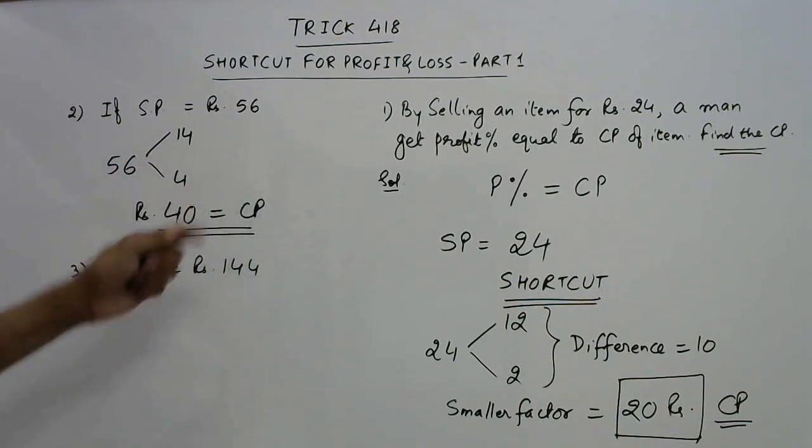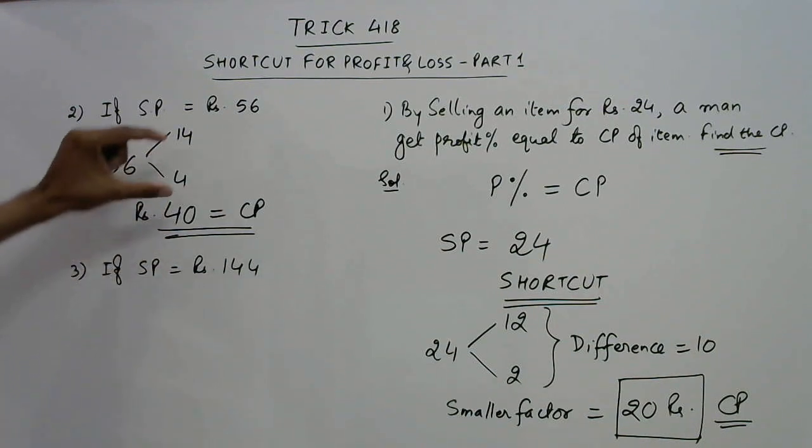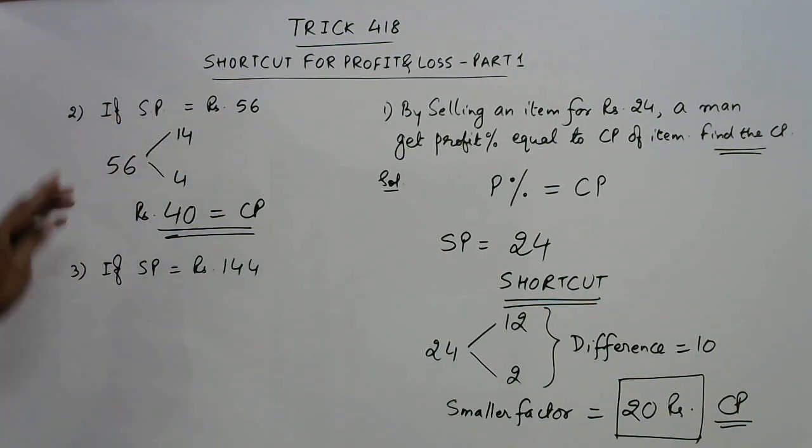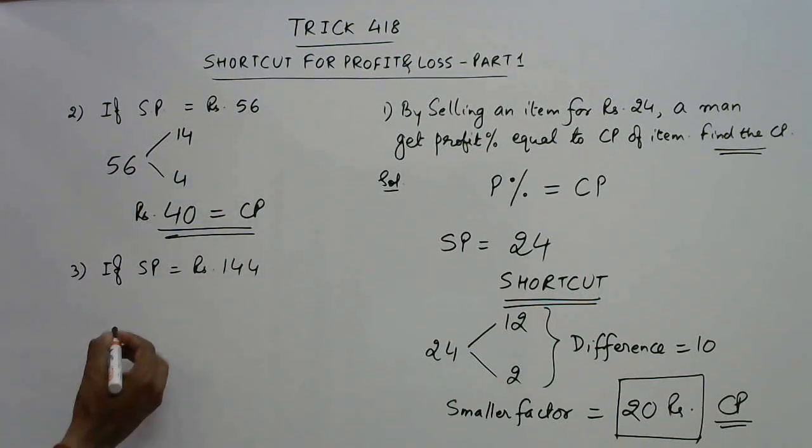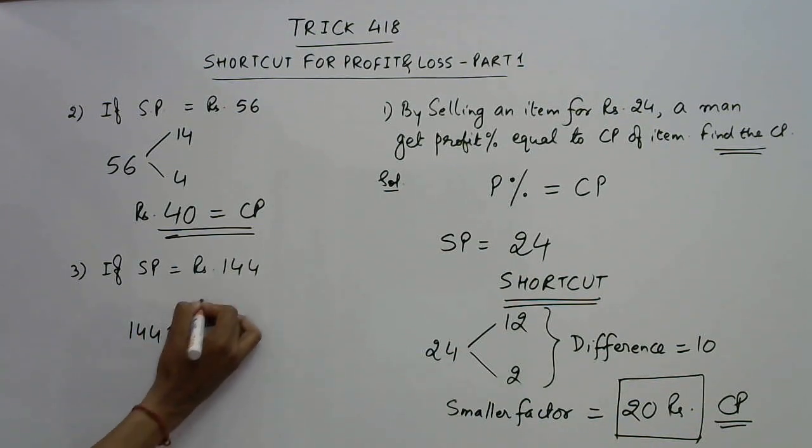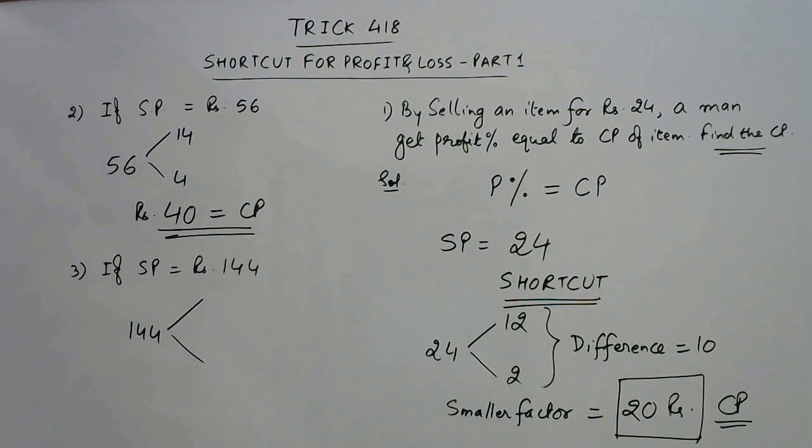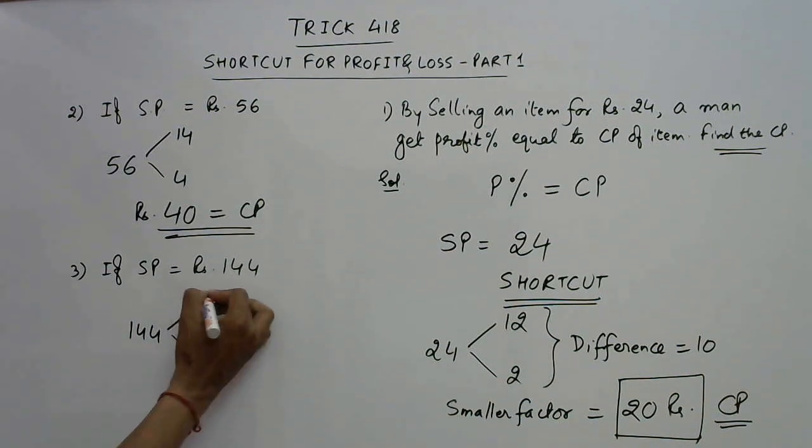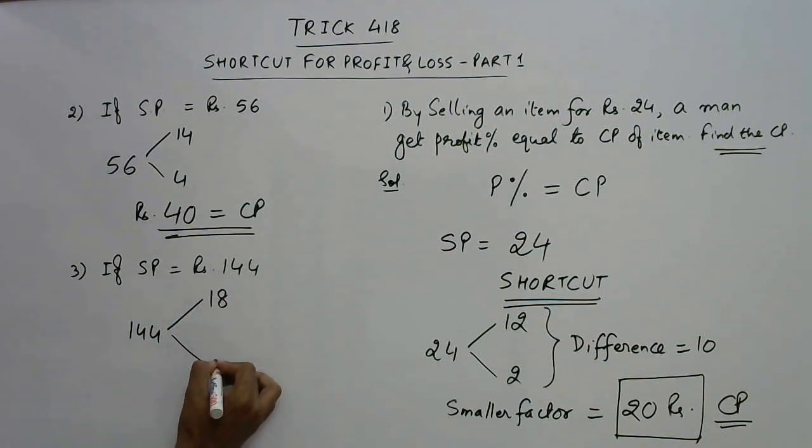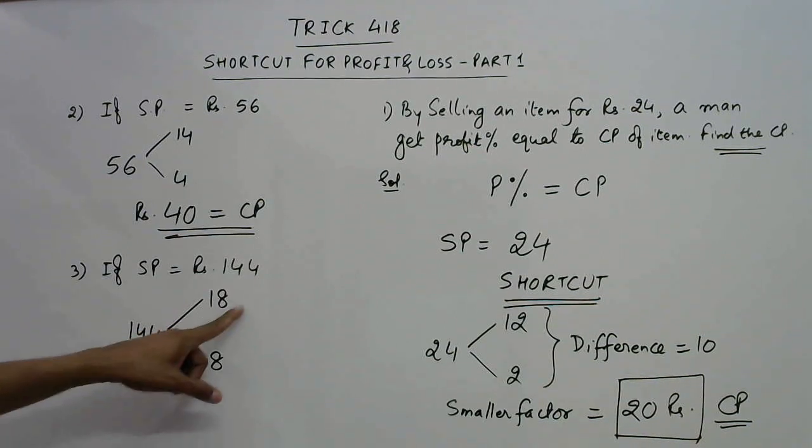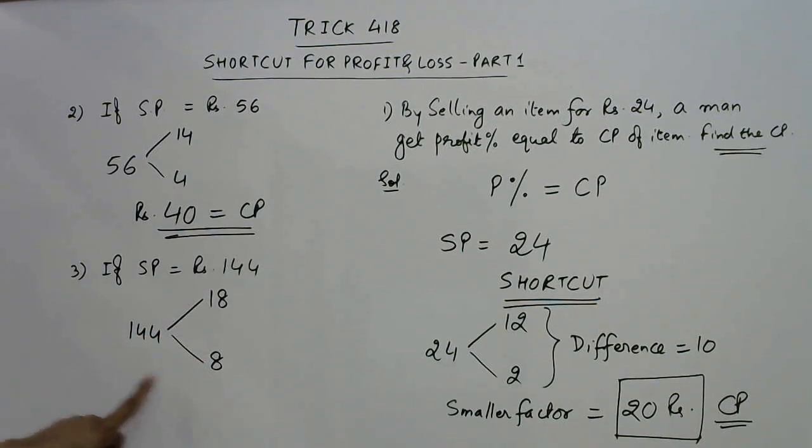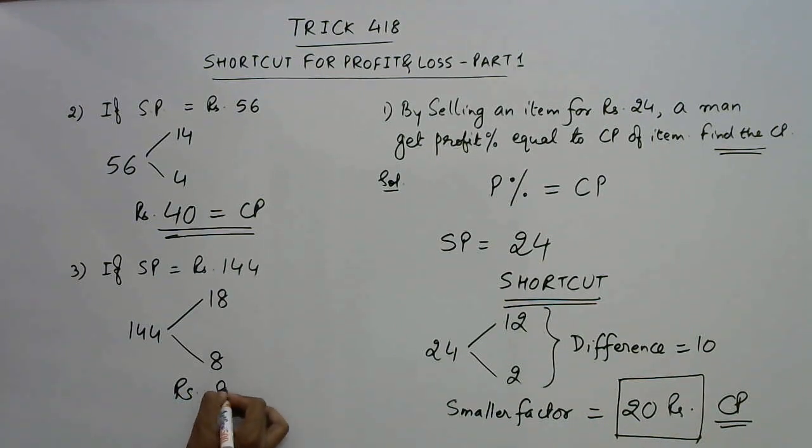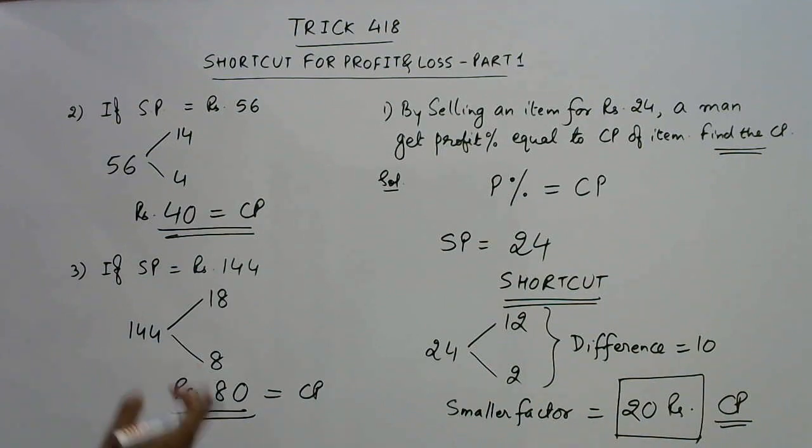Another question: selling price is 144. Now you need to split 144 into two factors whose difference is 10. We need two factors, 18 and 8 because 18 into 8 is 144. What is the smaller factor now? Smaller factor is 8, just put a 0, you get the value of the cost price.